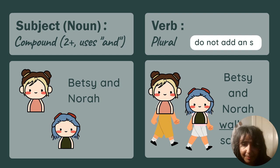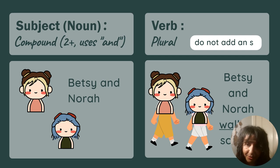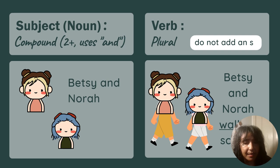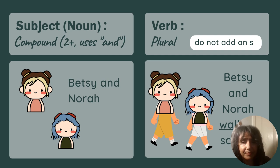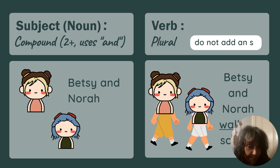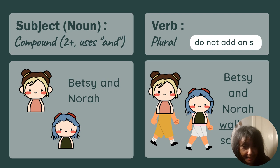Here's another one: Betsy and Nora. This is a compound subject — it talks about two nouns and uses the conjunction 'and.' Please go back and check that out if you want a refresher on conjunctions. Now, what verb would I put with a subject that has two or more nouns connected with the word 'and'? The rule is that when I have more than one noun or subject, I do not add an S to the verb. So for Betsy and Nora, we would say, 'Betsy and Nora walk to school.'